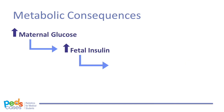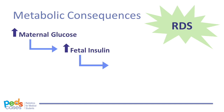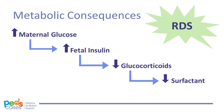Hyperinsulinemia not only leads to hypoglycemia in the newborn, but can also increase the risk for newborn respiratory distress. All infants require surfactant in their lungs for the alveoli to expand adequately. In a normal newborn, surfactant release is stimulated by circulating glucocorticoids. However, in the LGA infant, hyperinsulinemia suppresses glucocorticoid release, which in turn leads to decreased surfactant release, potentially causing newborn respiratory distress syndrome.